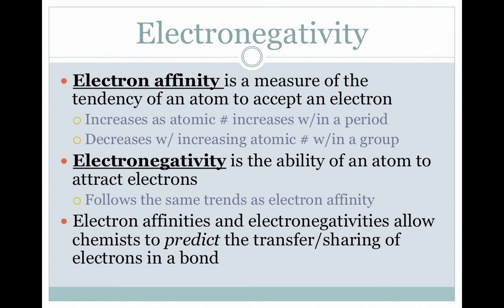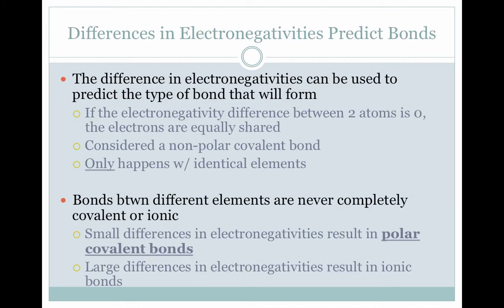These two things — electron affinity and electronegativity — allow us to predict what type of bond will form. What we look at is really the differences in electronegativities. There are actual numbers for electronegativities, but we don't really need the exact numbers; we can just look at the placement of elements on the periodic table. If the electronegativity difference between two atoms is zero, the electrons are completely equally shared — this is called a non-polar covalent bond, and it only happens with bonds between two identical elements.